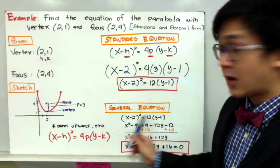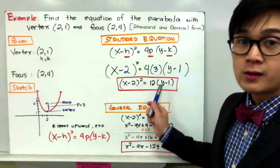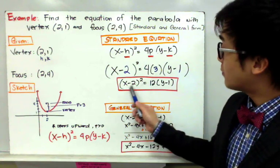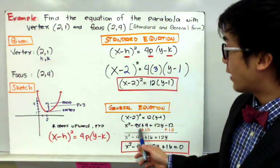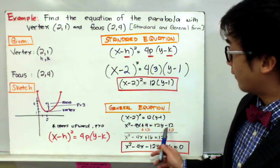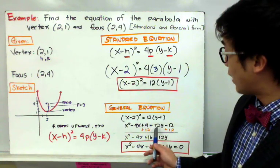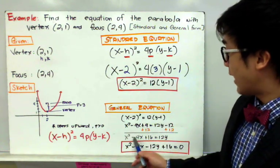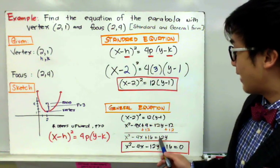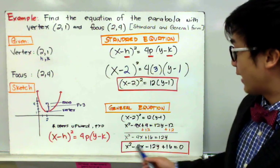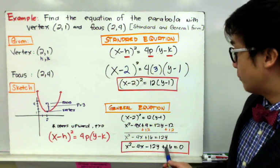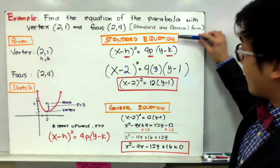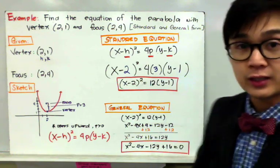The general form is obtained by equating the equation to 0. Distribute 12 to (y − 1) and expand (x − 2)²: we get x² − 4x + 4 = 12y − 12. Moving all terms to one side — add 12 to both sides, then subtract 12y from both sides — gives the general equation: x² − 4x − 12y + 16 = 0. This is the general form of the equation of the parabola.